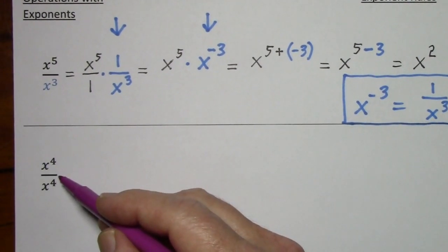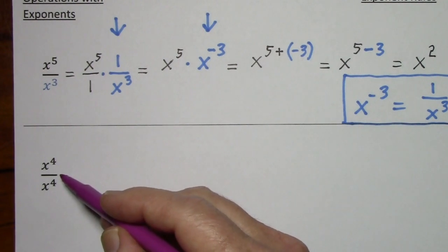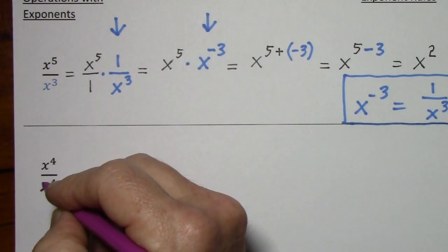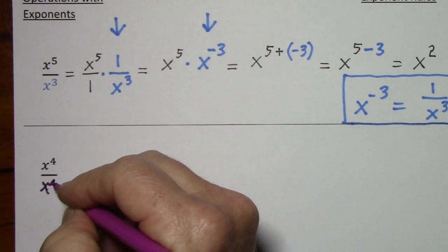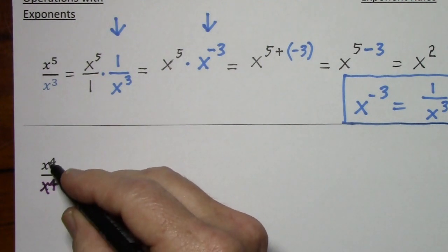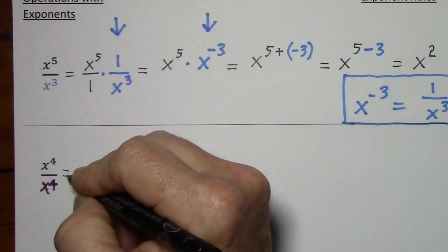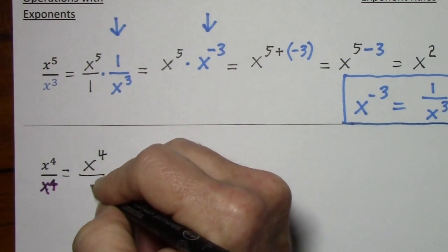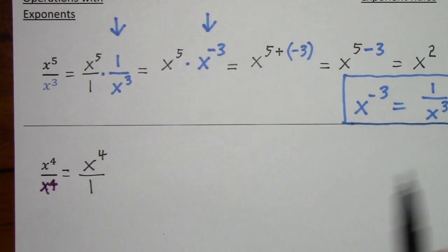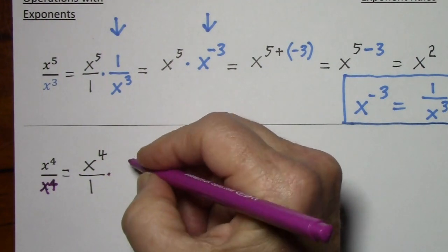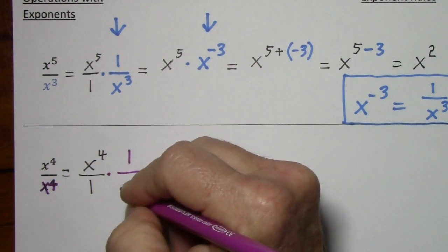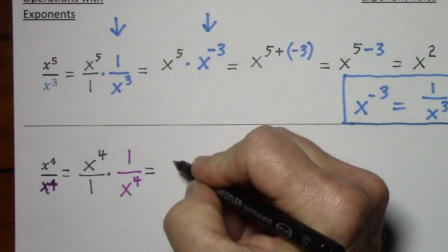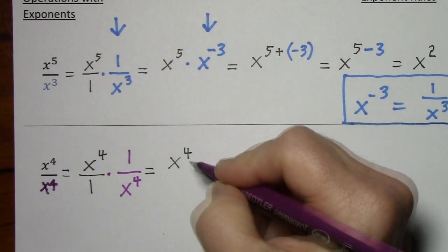And now with this example, we'll look at what happens when you have a zero exponent. Following the pattern I used above, this denominator x to the fourth — I'll be rewriting the numerator and denominator. So the numerator I can write as x to the fourth over one, and I can say times one over x to the fourth.